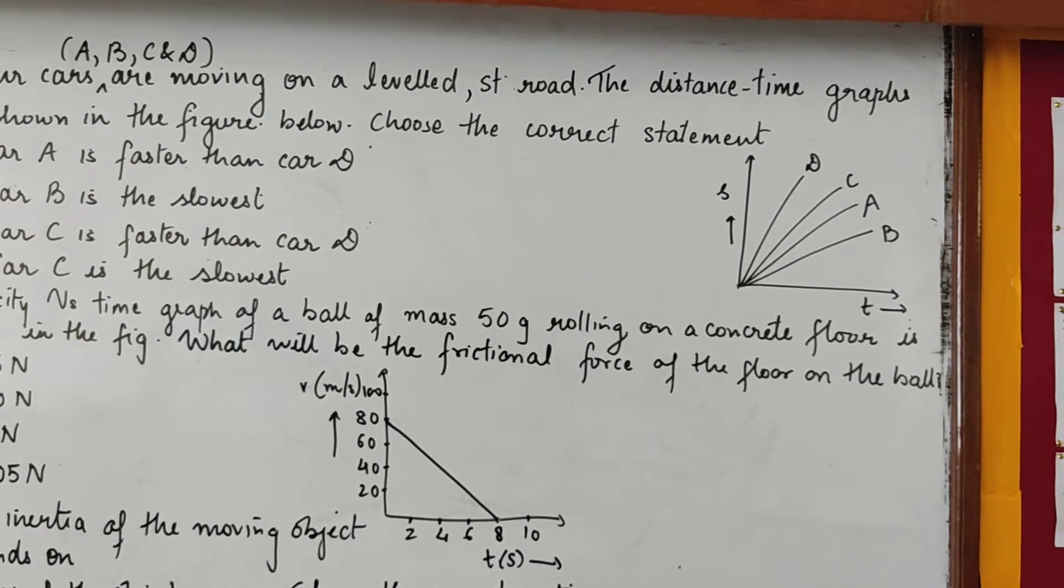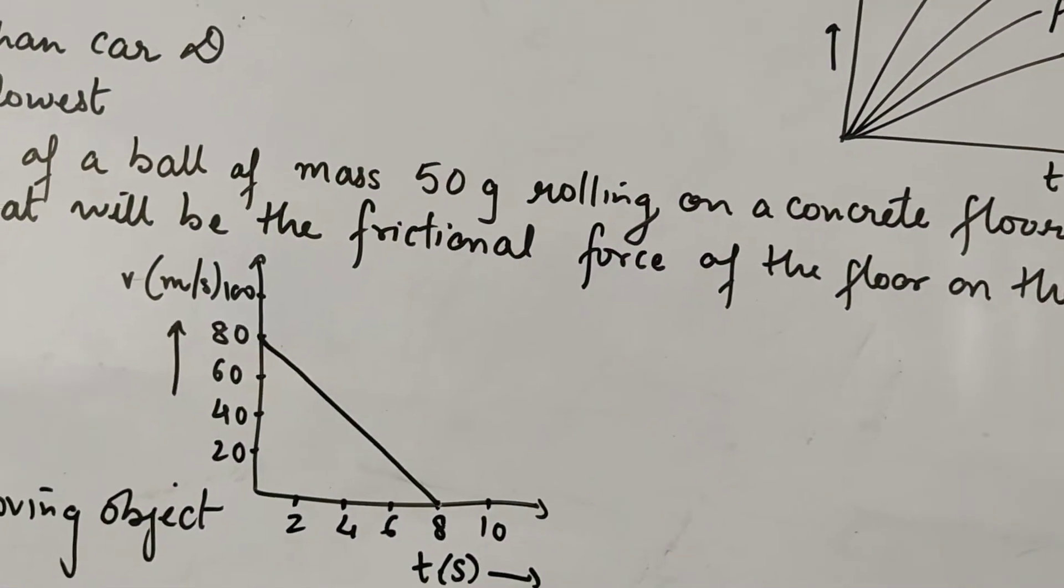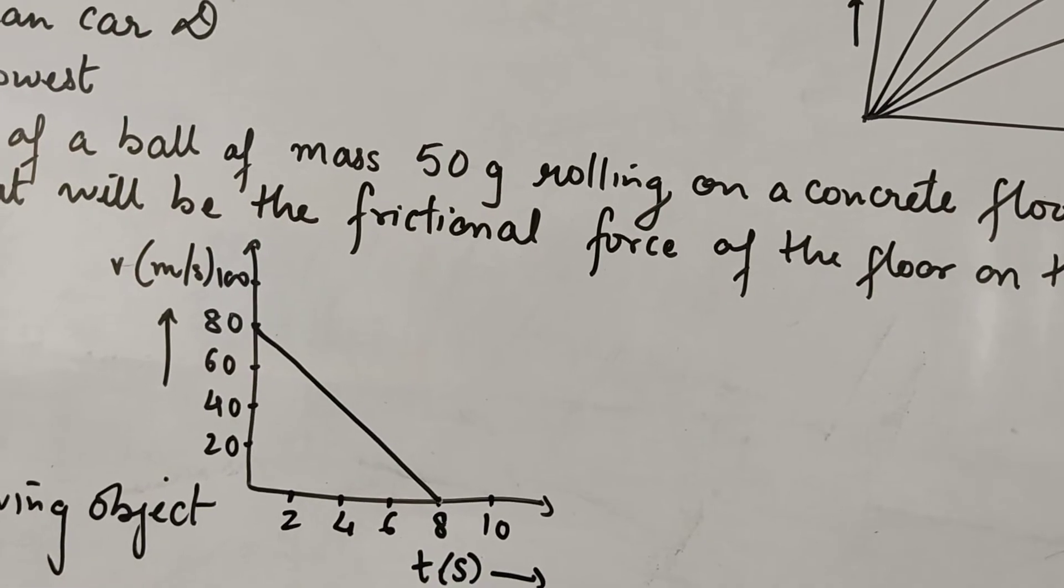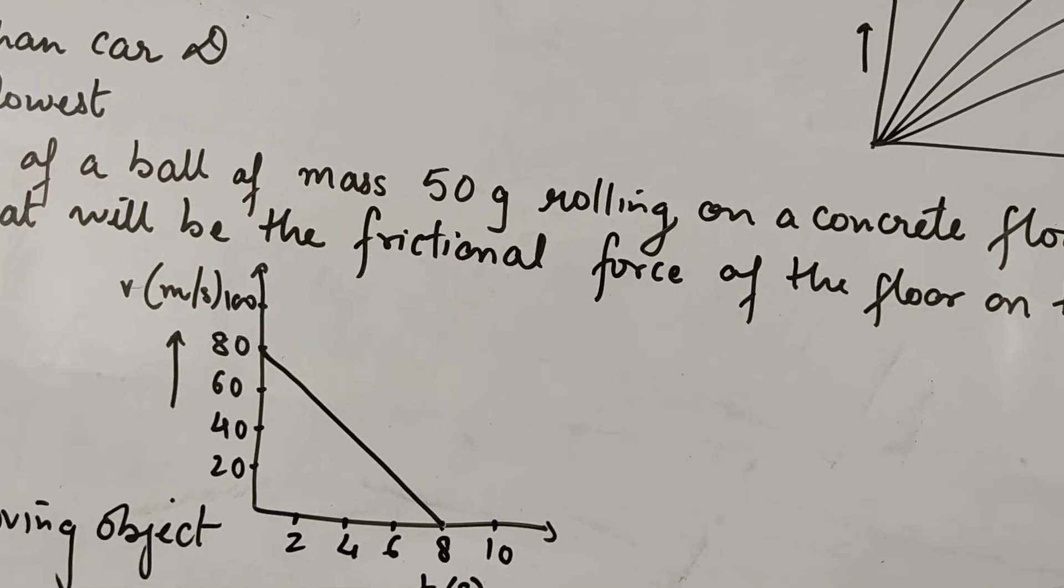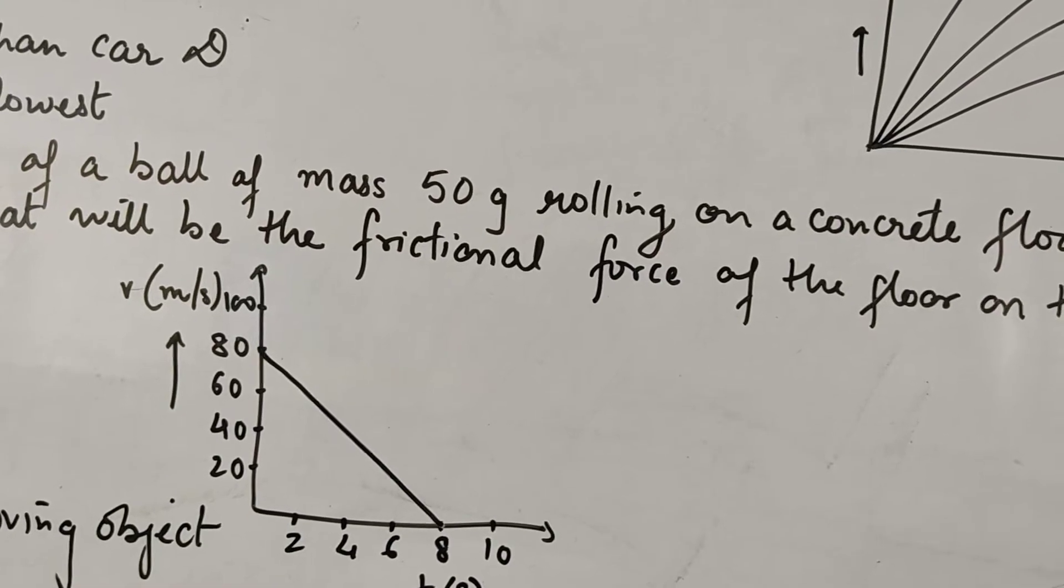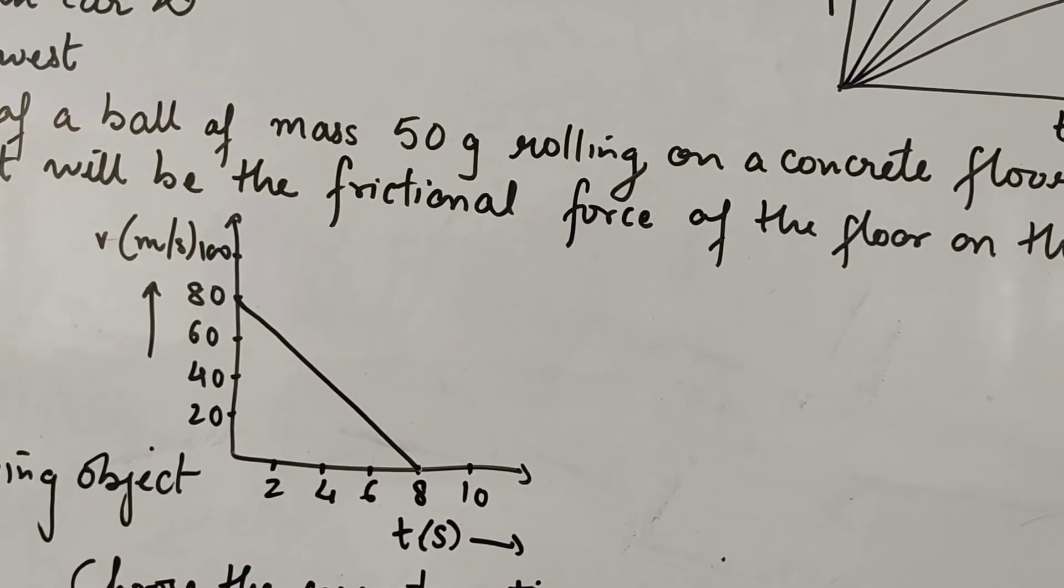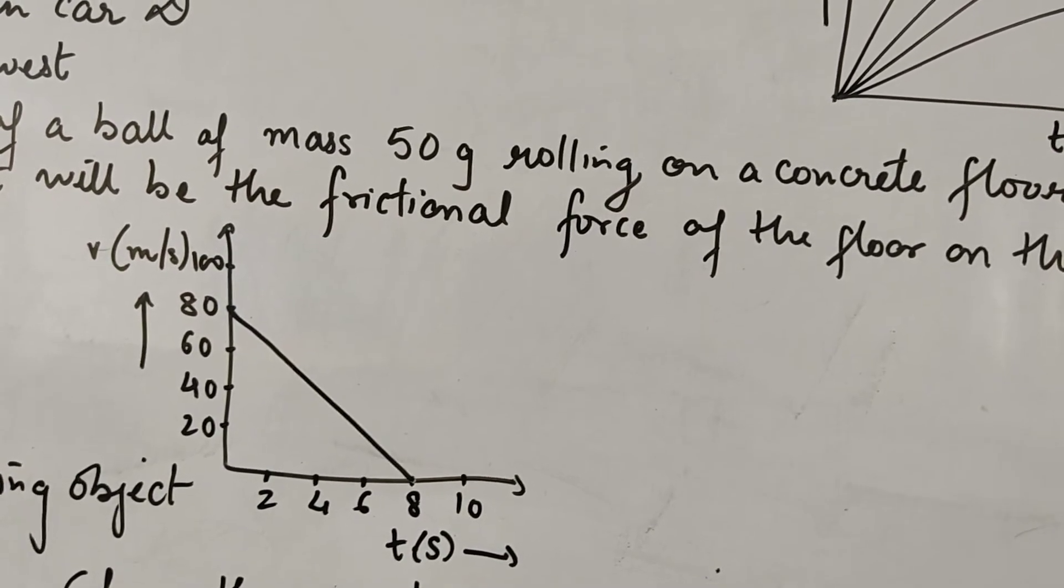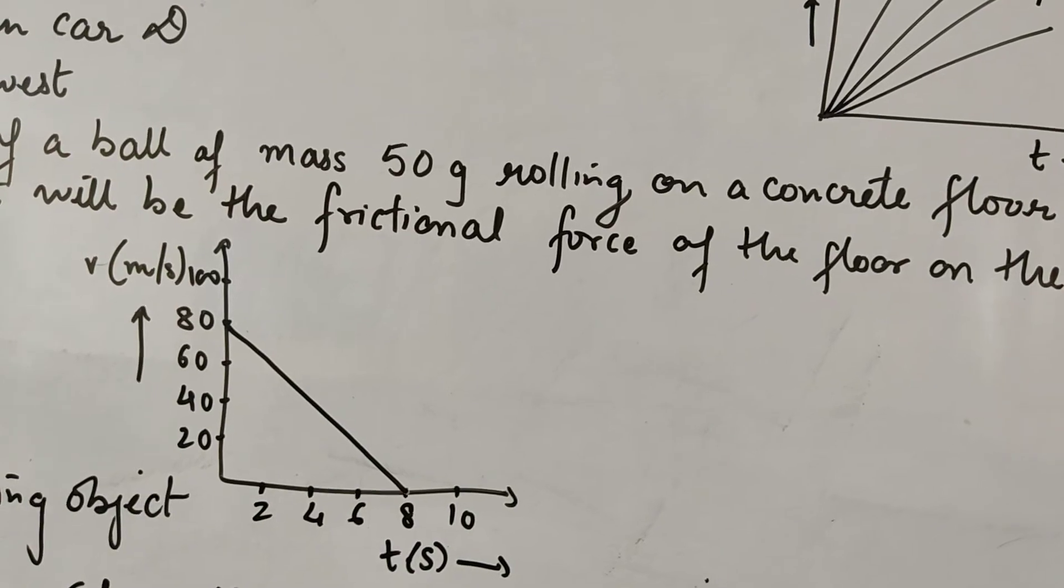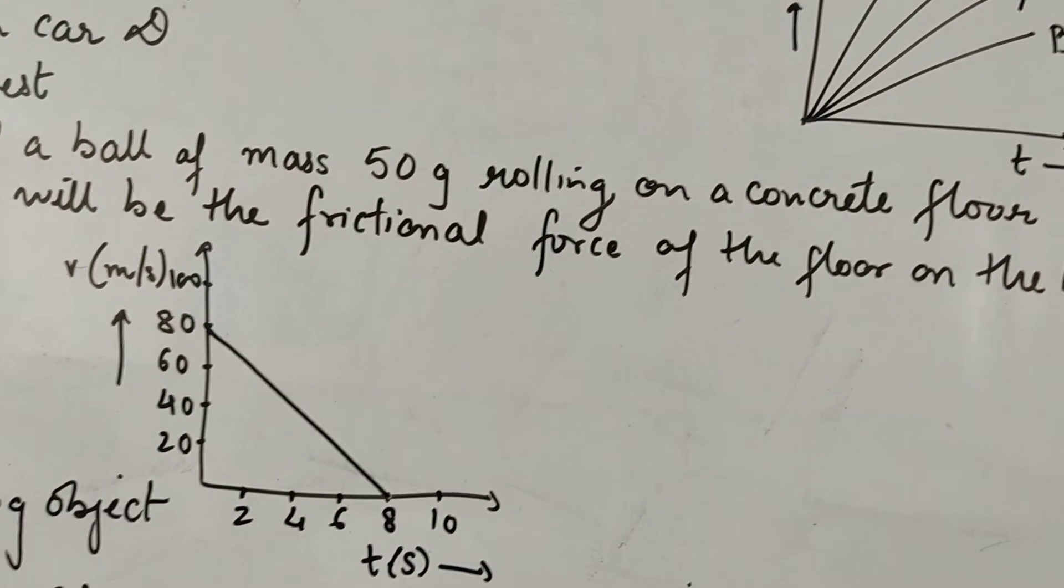Velocity time graph of a ball of mass 50 gram rolling on a concrete floor is shown in the figure. What will be the frictional force of the floor on the ball? Now we know that this is a VT graph, right?